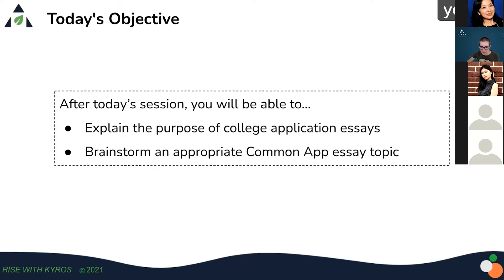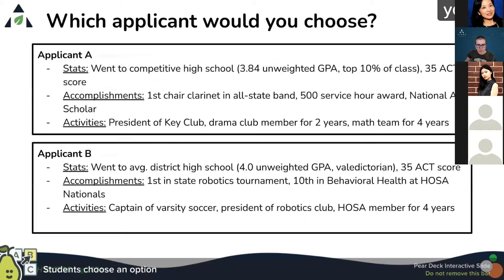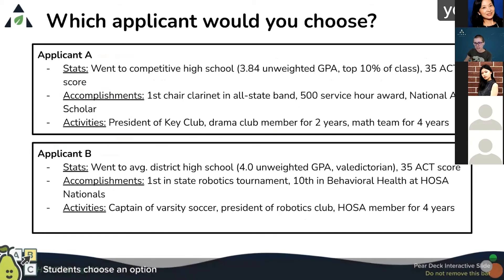Next week you'll come in having brainstormed some essay topics. We're going to have a little exercise where we see what it's like to be an admissions officer and imagine that we have to pick between two applicants — applicant A and applicant B. First we're just going to look at their stats and decide which one we want to pick based on what they look like on paper, and then we'll see their essays.